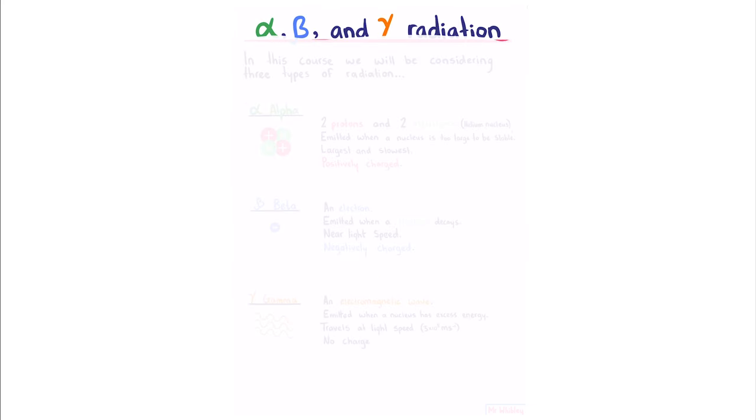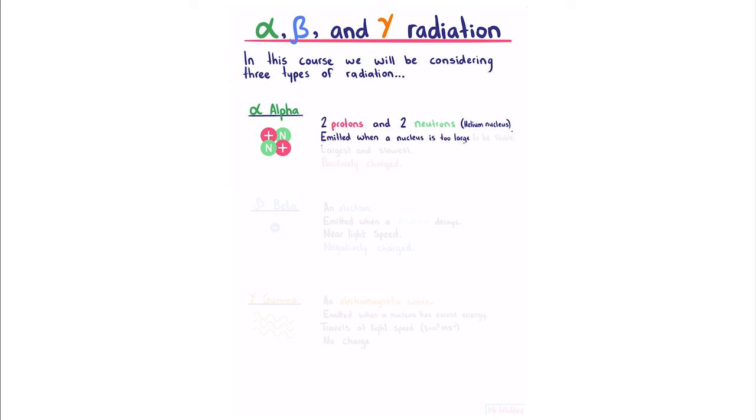Alpha, beta and gamma radiation. In this course, we will be considering three types of radiation. Alpha radiation consists of two protons and two neutrons, which is essentially a helium nucleus. It's emitted when a nucleus is too large to be stable. It is the largest and slowest of the three we'll talk about, and because of its two protons, it is positively charged.